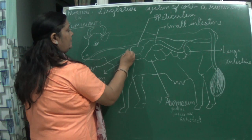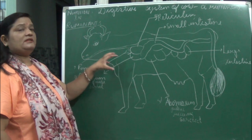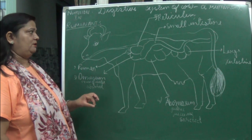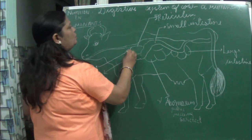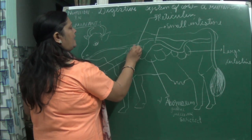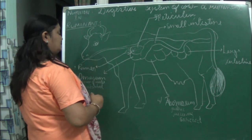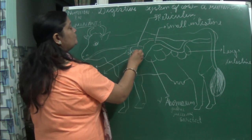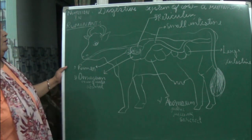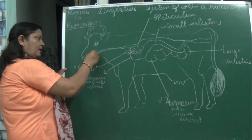After taking in grass, they chew the grass and it reaches the rumen, where it is stored for some time. Digestion starts there and it is only partially digested, then moved on to the reticulum. Here the food is again partially digested — a bit more than in the rumen — and it forms what is called cud.